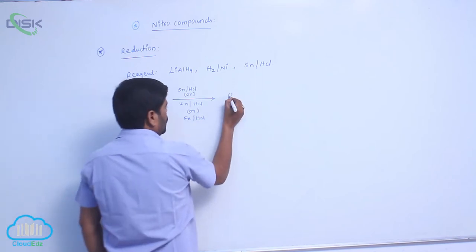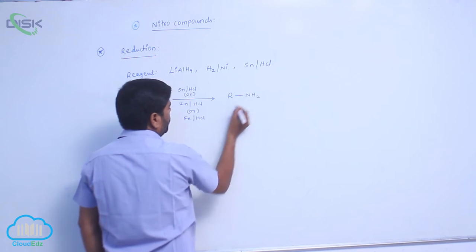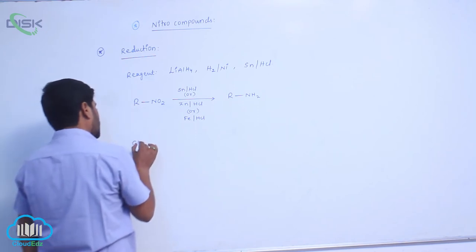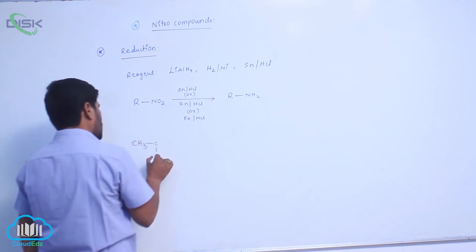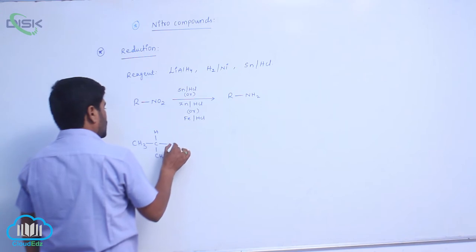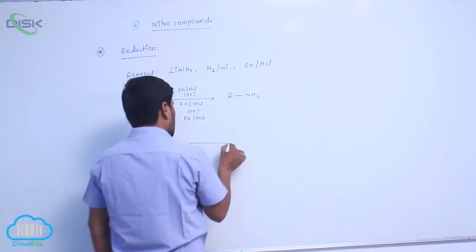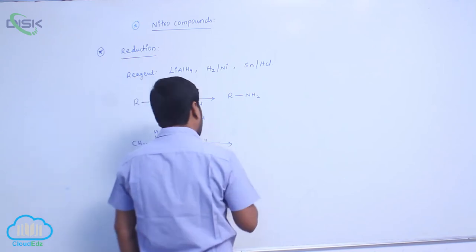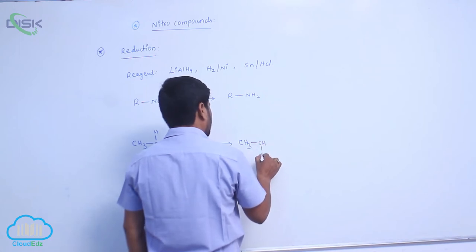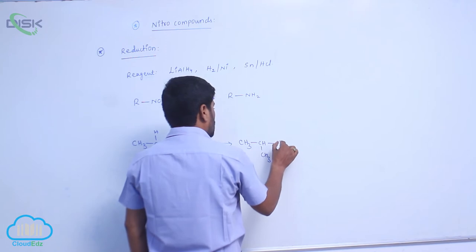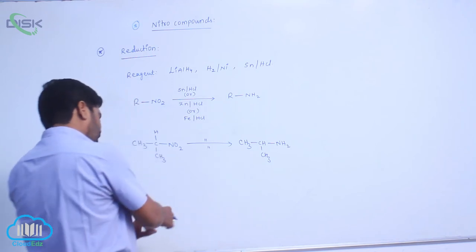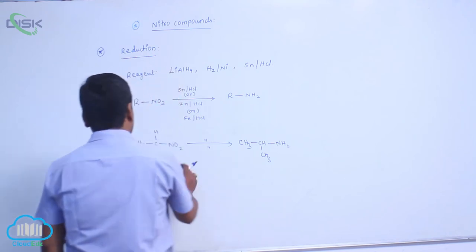The nitro group converts into an amino group. When a reducing agent is added to a nitroalkane — for example, 2-nitropropane — it converts into 2-aminopropane, also known as 2-propanamine. This is about the reduction of nitroalkanes.